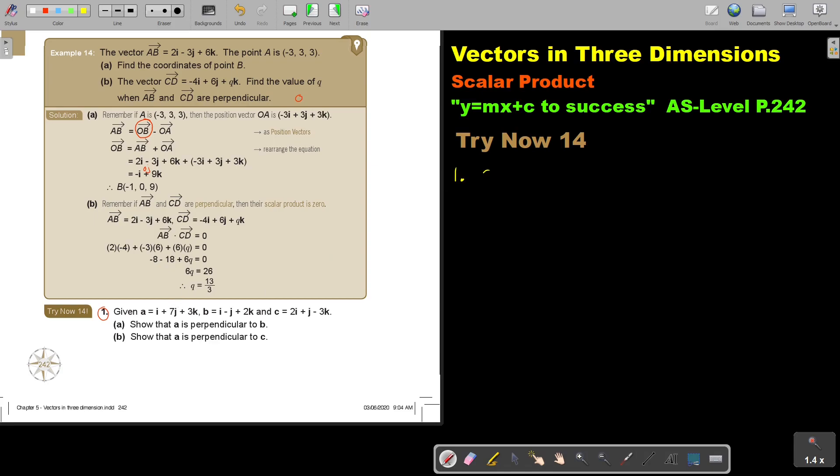Number 1. I have that A, and it's I, I, plus 7J, plus 3K. And then I have B, and that is I, minus J, plus 2K. And then I have C, is 2I, plus J, minus 3K.